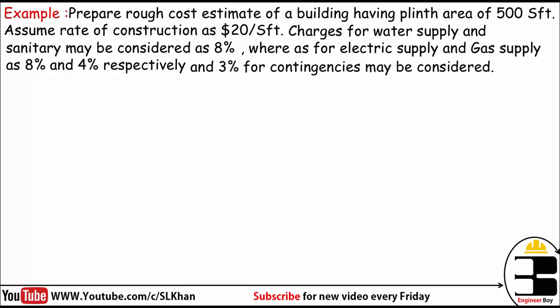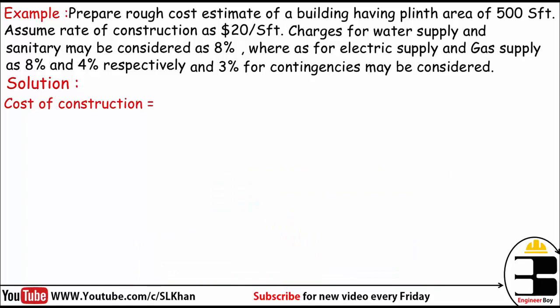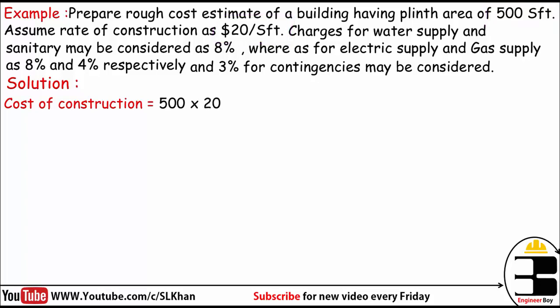To prepare the rough cost estimate of the given building, we first calculate the cost of construction. The total plinth area is 500 SFT, so we multiply this area by the rate of construction, which is $20 per SFT. We get the cost of construction equals $10,000.